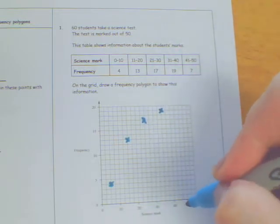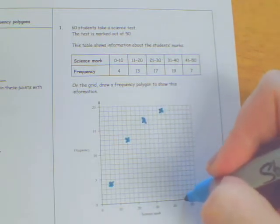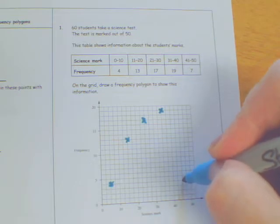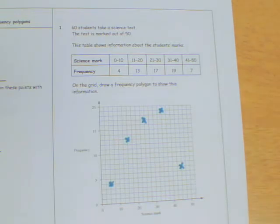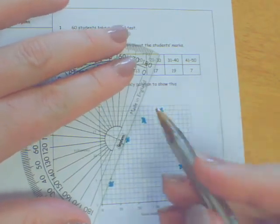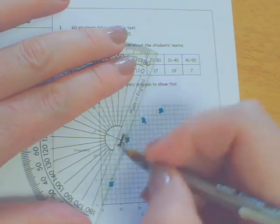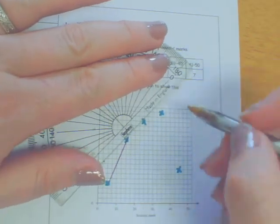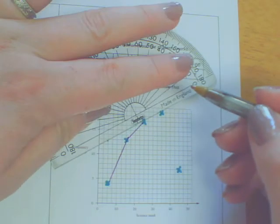And 41 to 50, so this section here, you go halfway and we're going up to 7. What we're going to do is join those up with a straight edge, straight lines. That's what we want. We don't want curves. No curves whatsoever. Play dot to dot again.